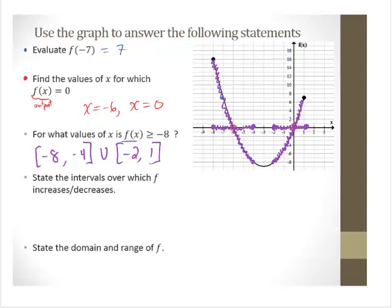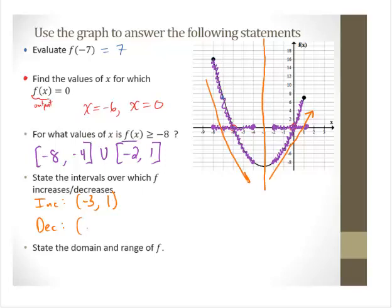State the intervals over which f increases and decreases. The function changes at x = −3. It is increasing on the interval (−3, 1) — we do not include 1, so we use a parenthesis there. It is decreasing on the interval (−8, −3). Remember, when describing intervals where a function is increasing or decreasing, we always describe it in terms of x values.